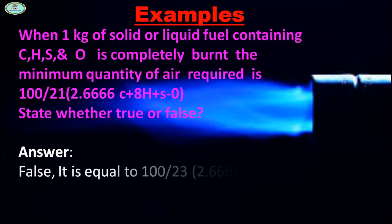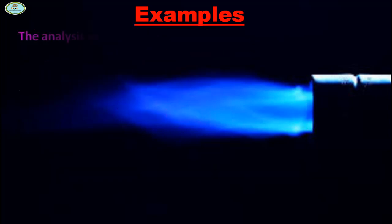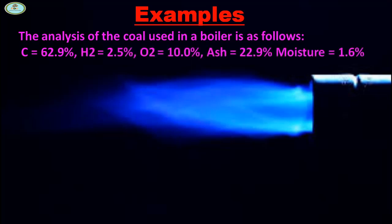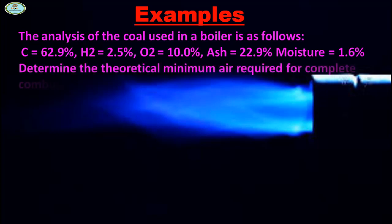It is equal to 100/23 × (2.666C + 8H + S - O). The analysis of the coal used in a boiler is as follows: C = 62.9%, H2 = 2.5%, O2 = 10%, S = 22.9%, moisture = 1.6%. Determine the theoretical minimum air required for complete combustion of 1 kg of coal.